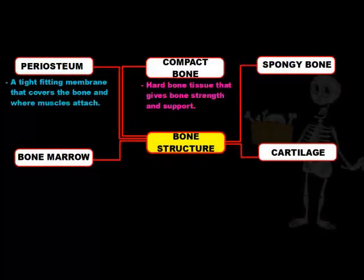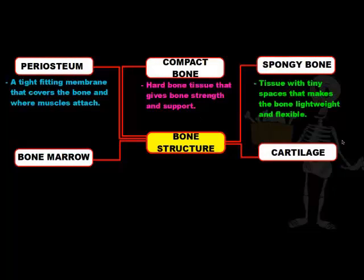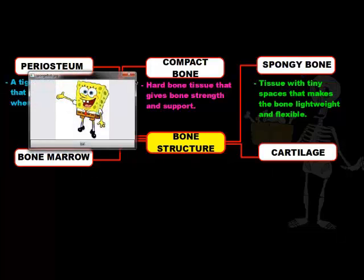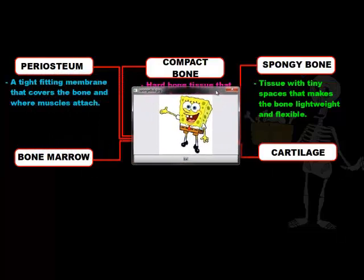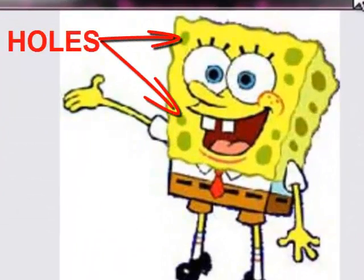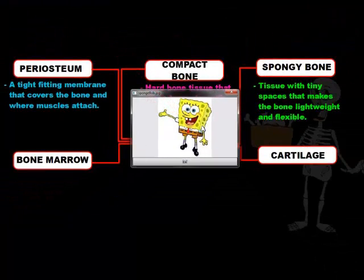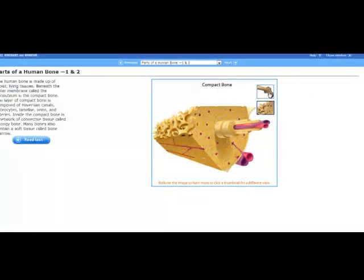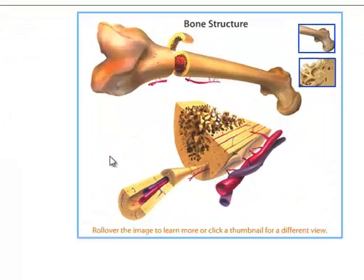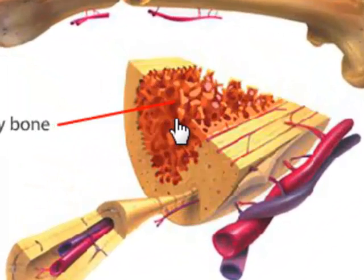The third part of the bone we're going to talk about is called spongy bone. Spongy bone is a tissue with tiny spaces that makes the bone very lightweight and flexible. An easy way to remember what spongy bone looks like is to think of your favorite cartoon character — SpongeBob SquarePants. He's a sponge, and as all sponges have, SpongeBob is filled with a lot of holes, just like your kitchen sponge. So remember, the spongy bone inside the bone has a lot of open spaces. If we zoom back out, we can see that underneath the compact bone there is a layer of spongy bone.